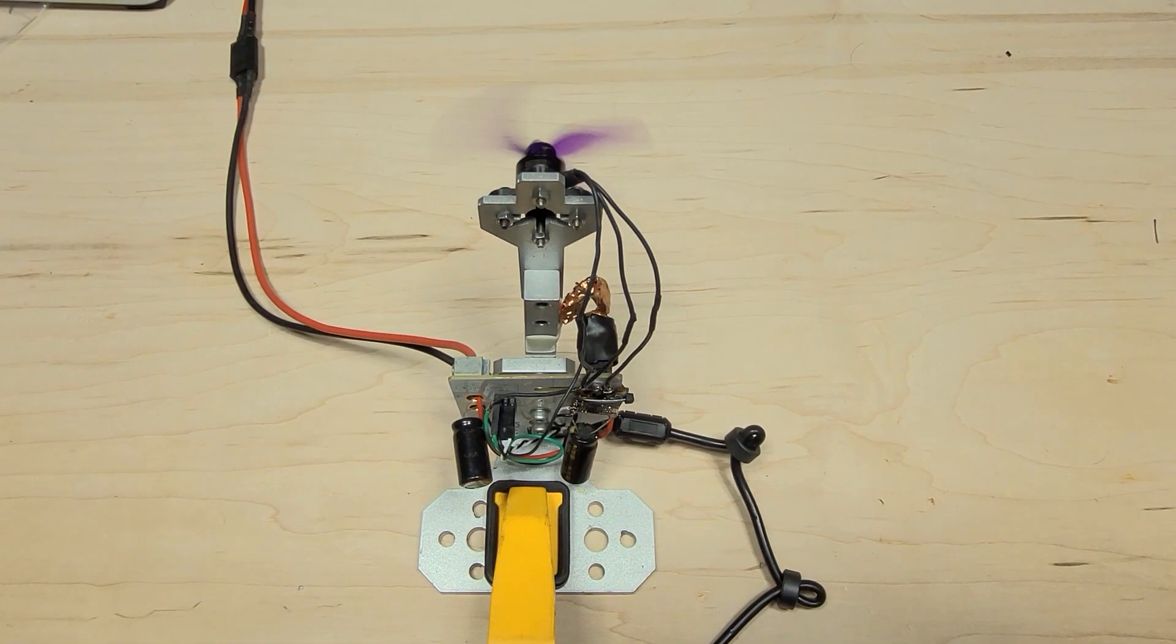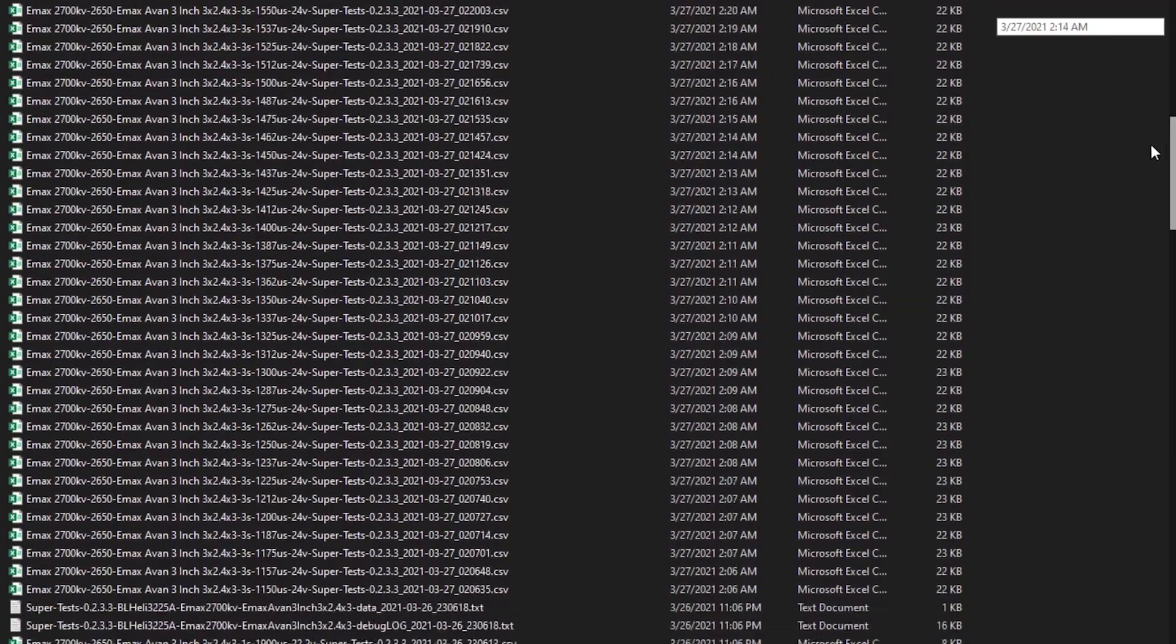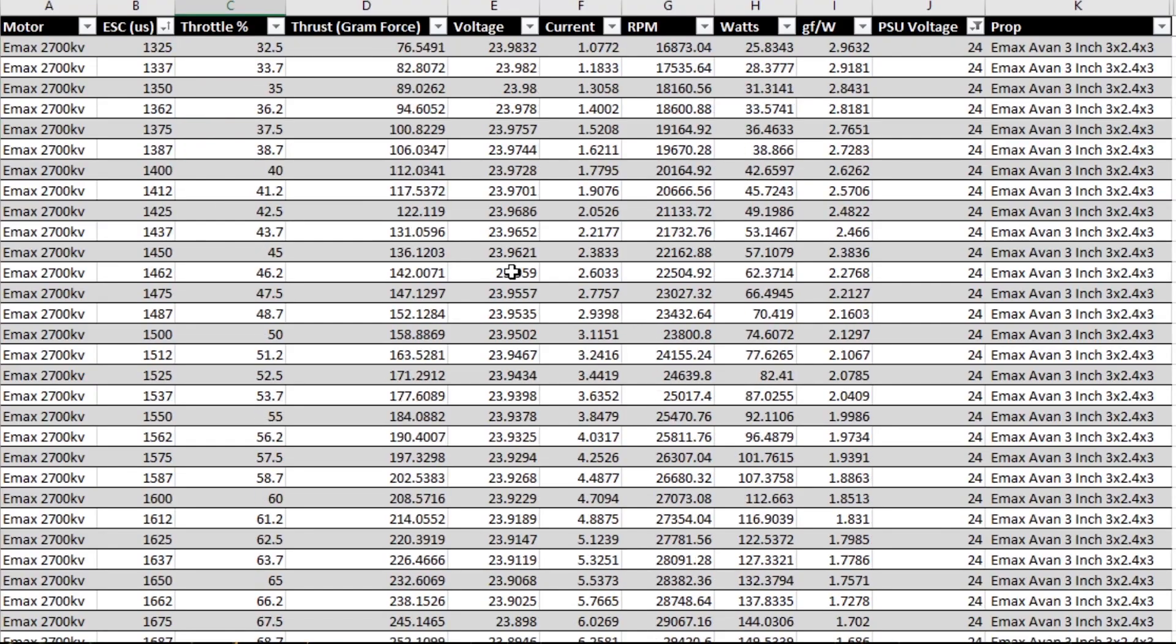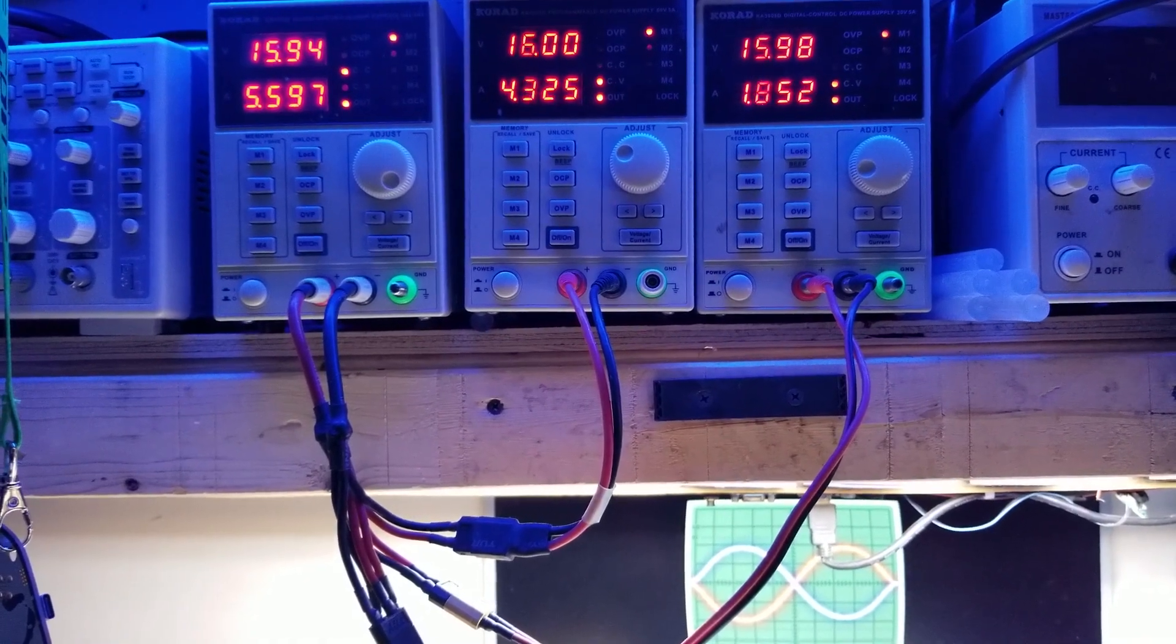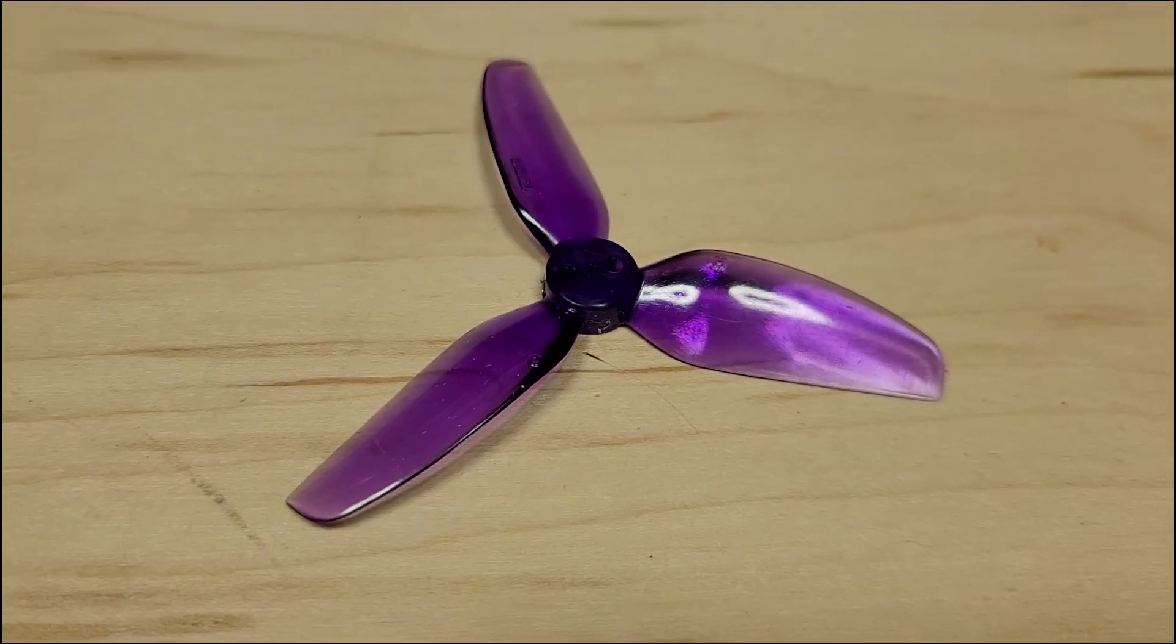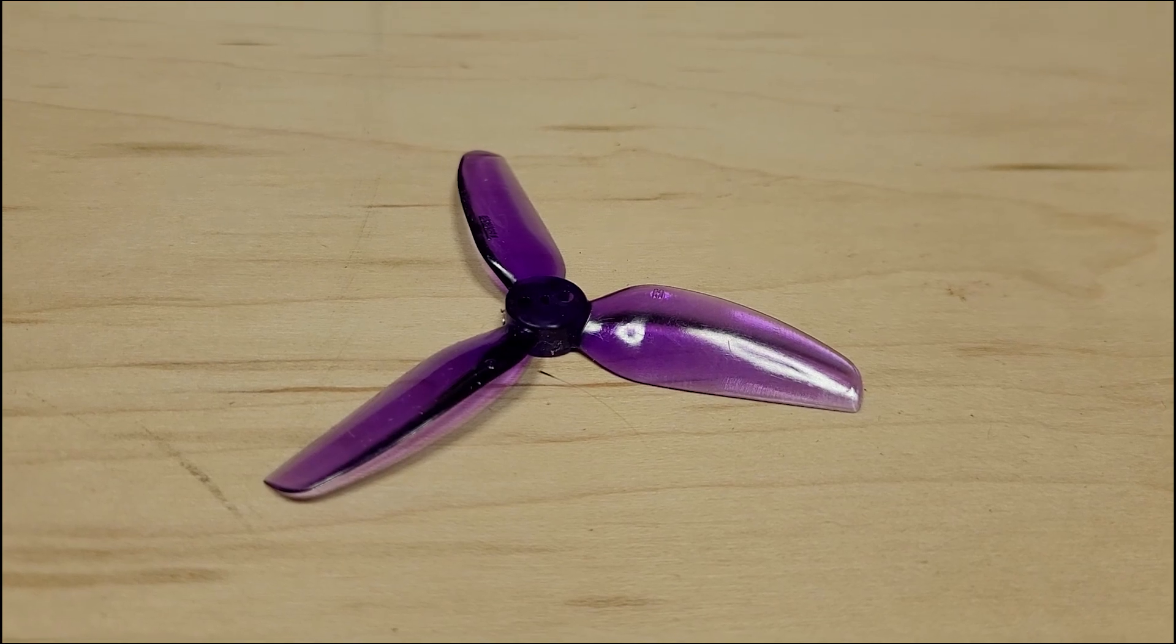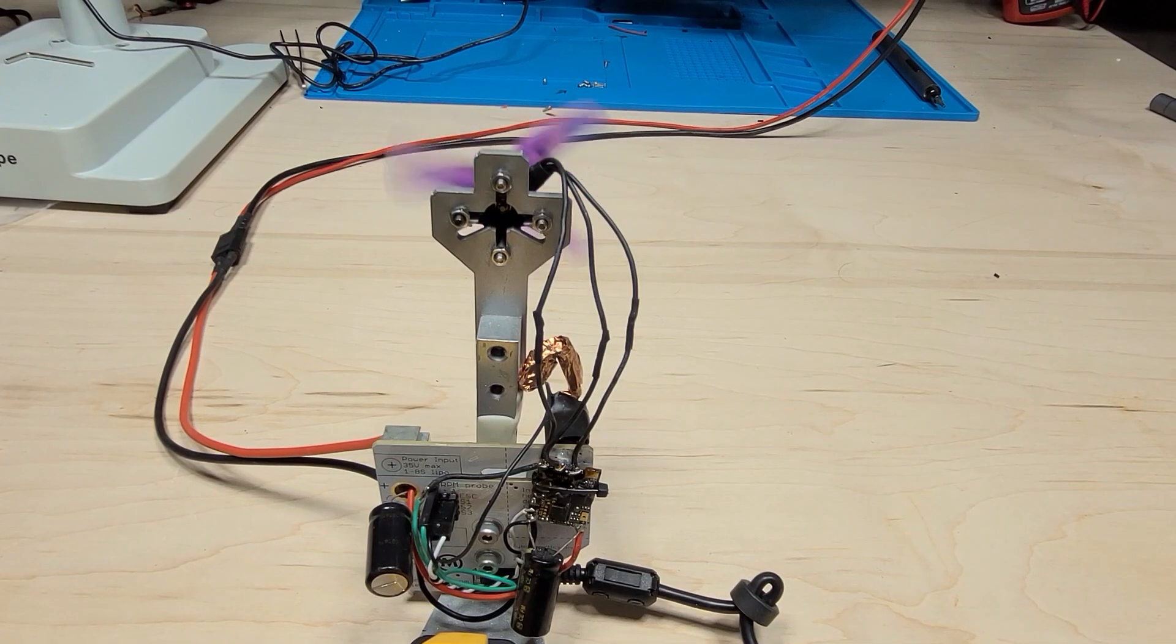To test each motor against one another, I will test them using my automated variable controlled motor testing methodology, which you can find more about in the video linked in the description. Each motor will be tested at 16 volts, using the three-inch HQ prop three blade three-inch pitch propeller, which stood out in the three-inch propeller test video, also linked in the video description, and should give them a decent amount of load.